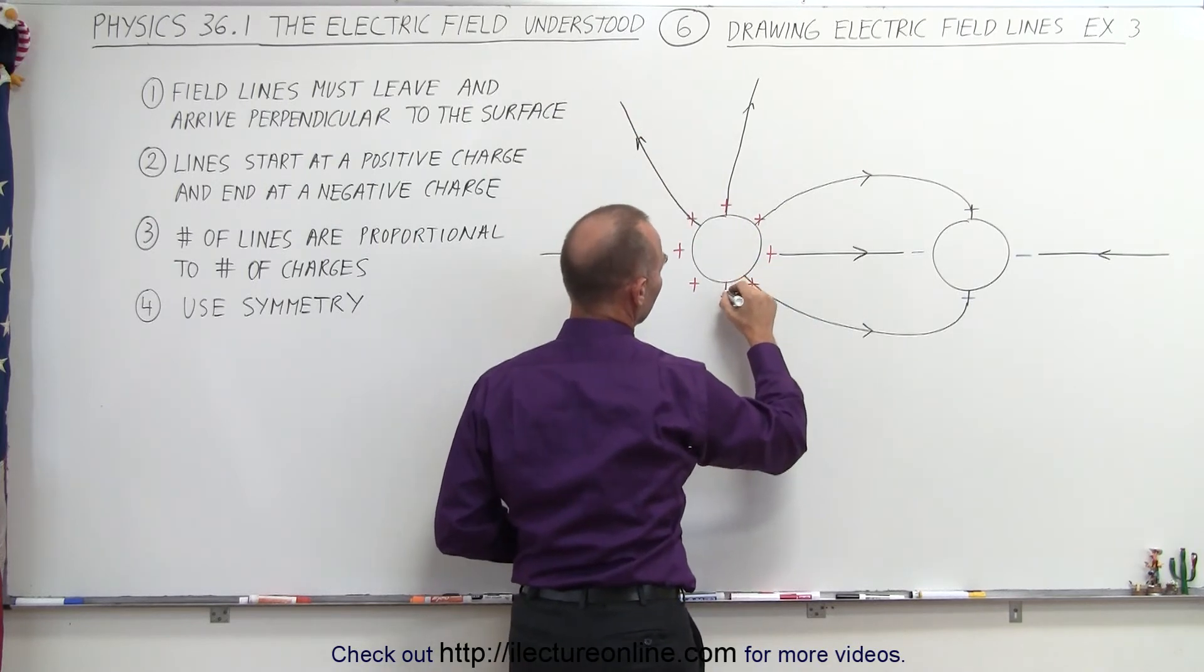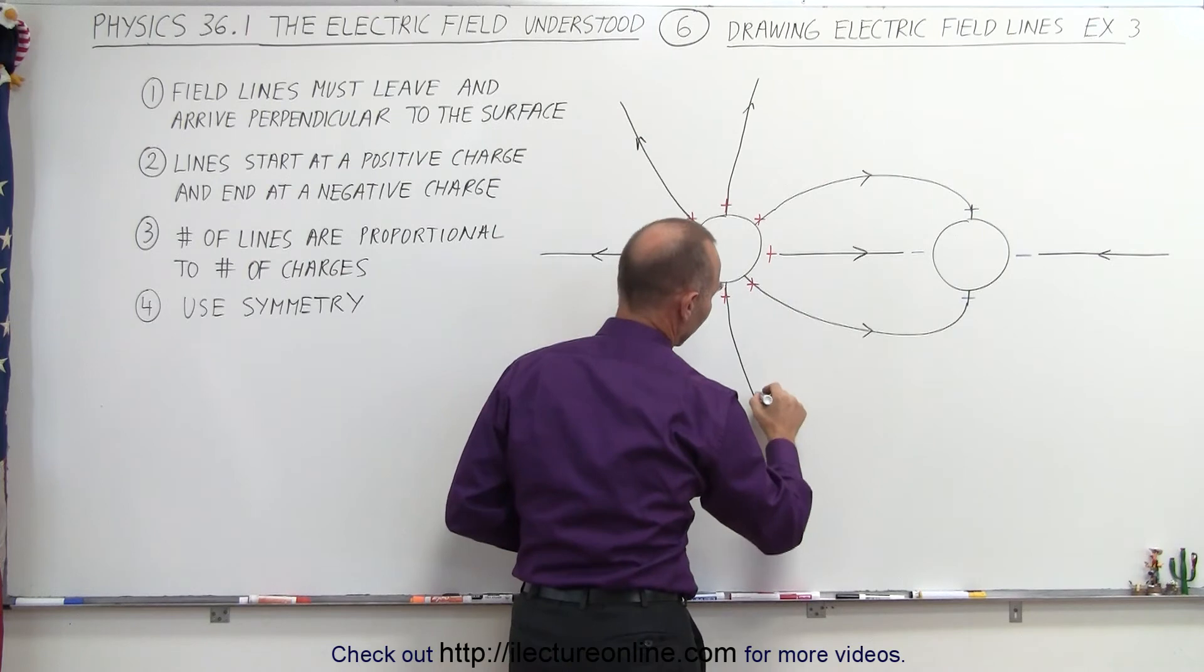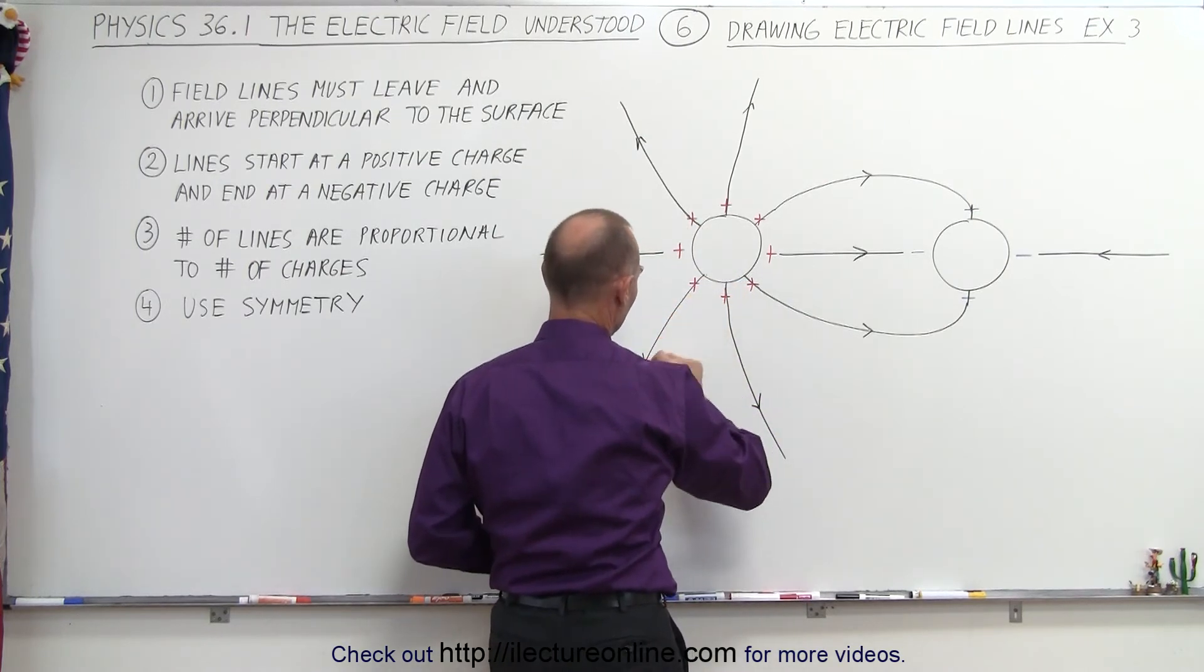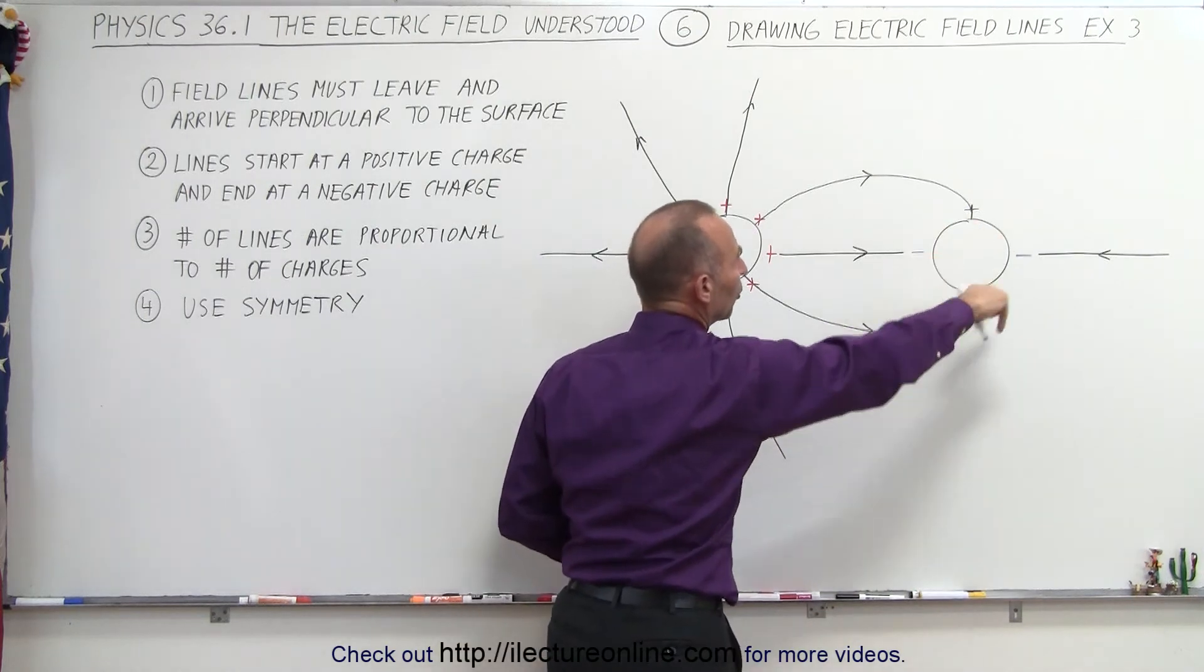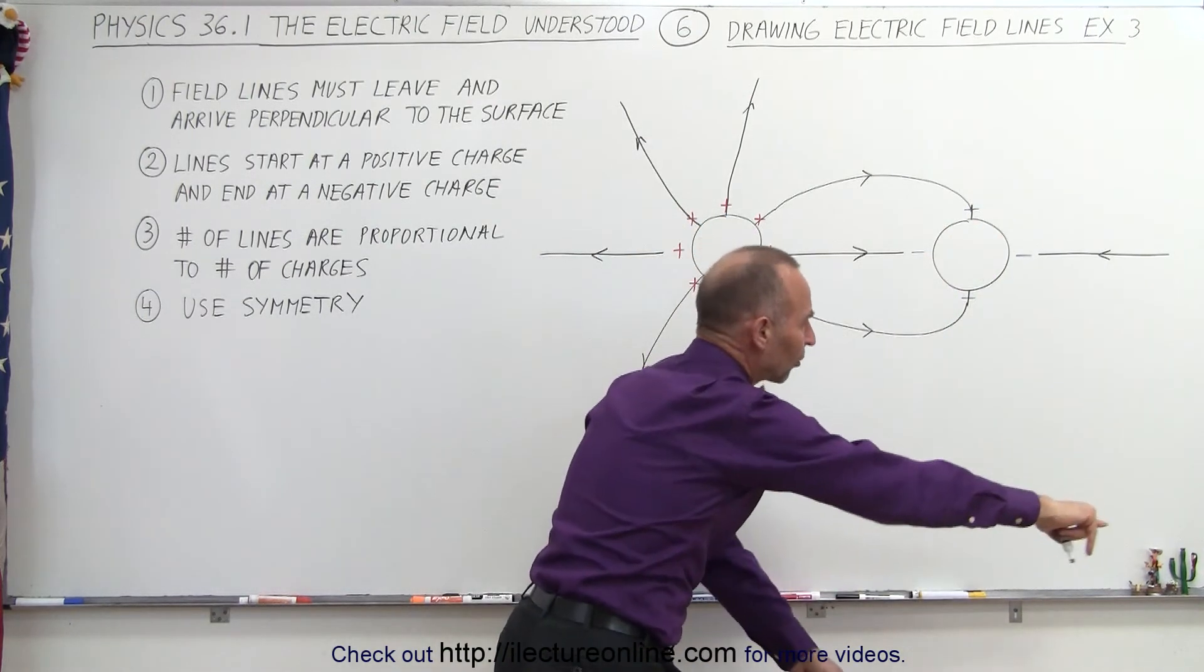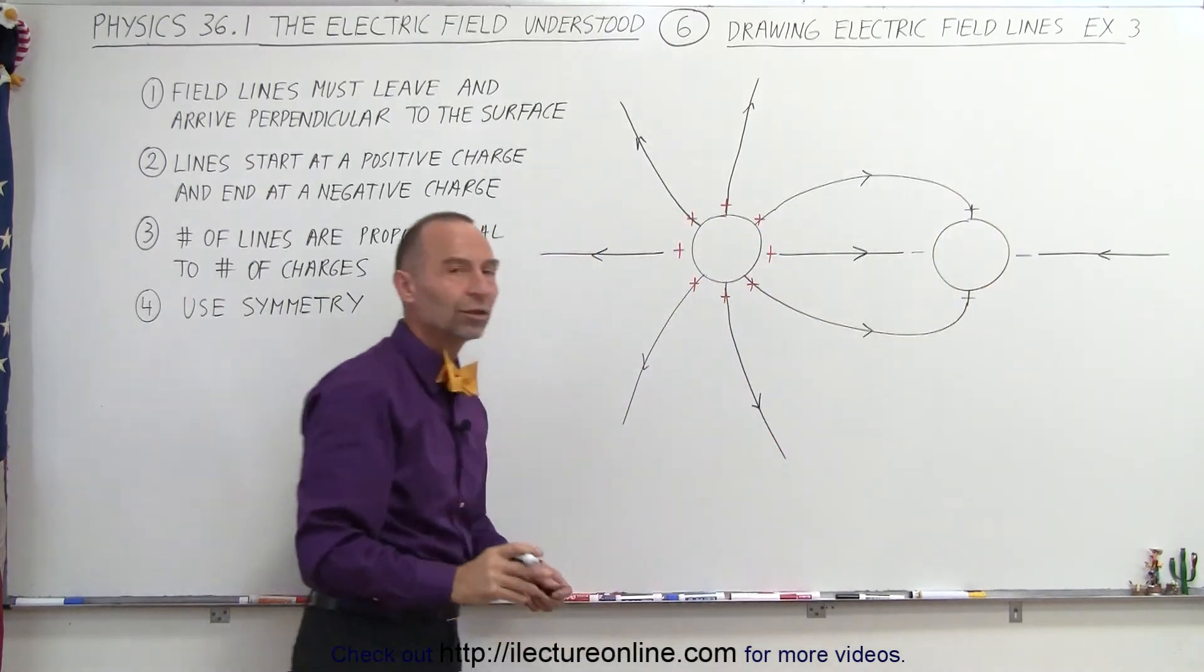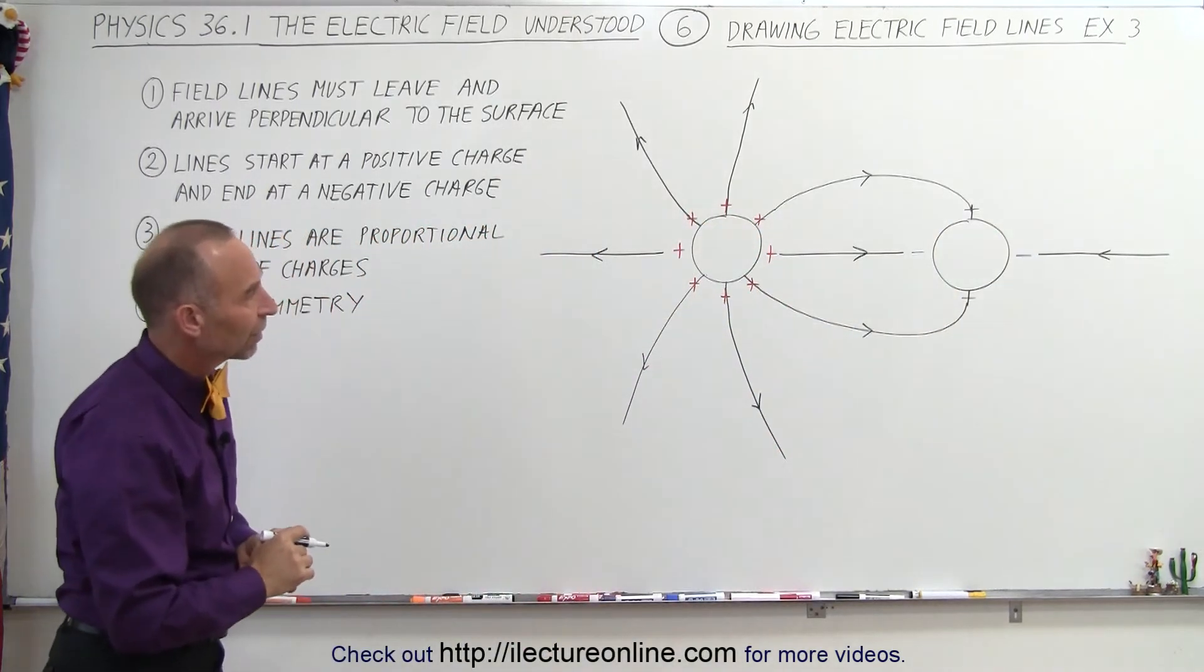Same over here. This will be curving slightly in this direction, and this one here will be slightly curving in this direction. But there's nowhere to go, so you'll see that this just goes straight out this way. But it will never terminate here because there's no additional negative charges for the electric field lines to go to.